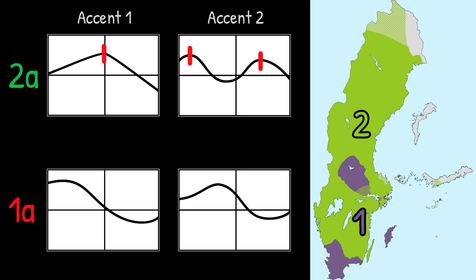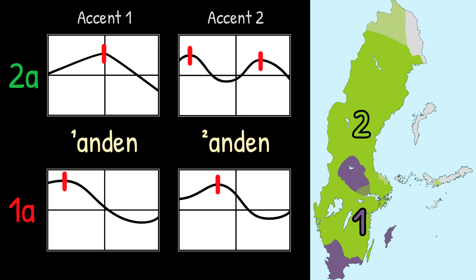Here's accent type 1a for comparison. As you can see, there is a single increase in pitch in both Accent 1 and 2, and the only difference is the timing of them. I can imagine this being a wee bit harder for someone trying to learn this from scratch. Anyway, let's listen to our duck-spirit pair to hear the difference.